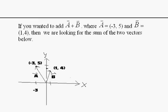If you wanted to add A + B where A equals (-3, 5) and B equals (1, 4), then we are looking at the sum of the two vectors below. So we're going to add these two vectors.